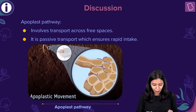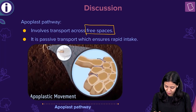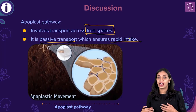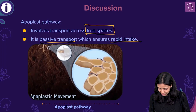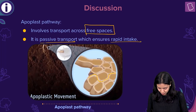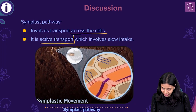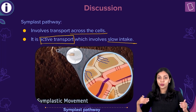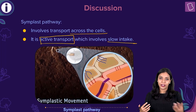The apoplast pathway involves transport across free spaces. It is passive transport and ensures a rapid intake since there is no resistance — movement happens in the spaces between the cells. The symplast pathway is the opposite: it involves transport across the cells through the cell membrane and is active transport, which is relatively slow. Transport happens through the plasmodesmata across different cells present in the plant.